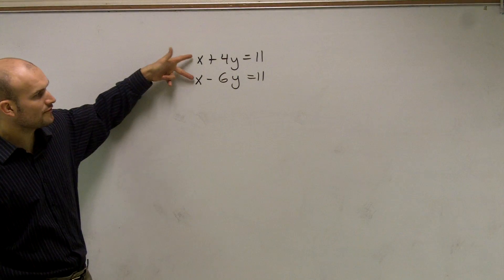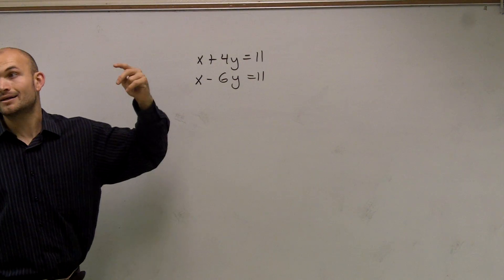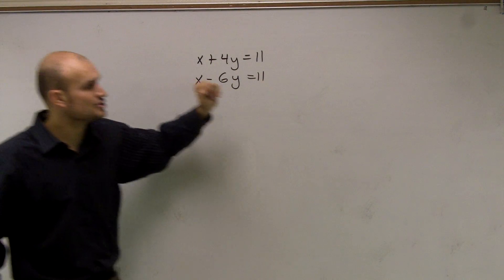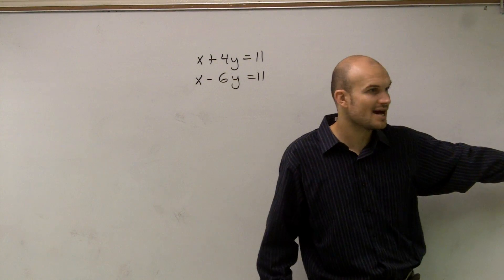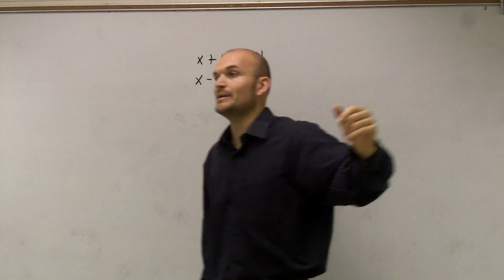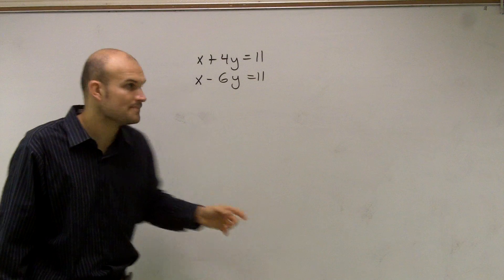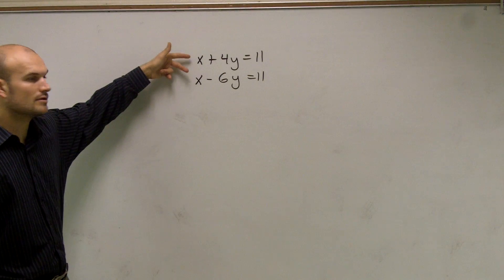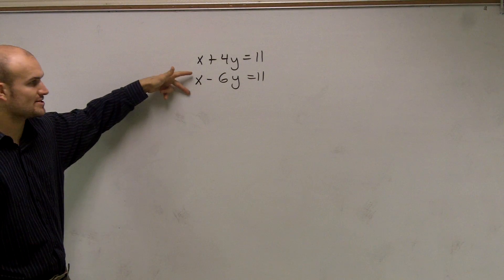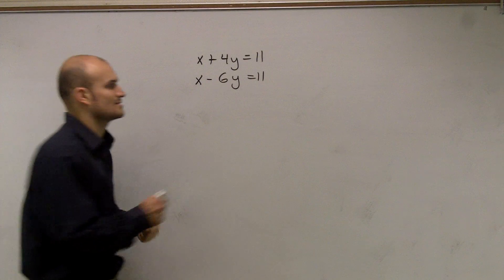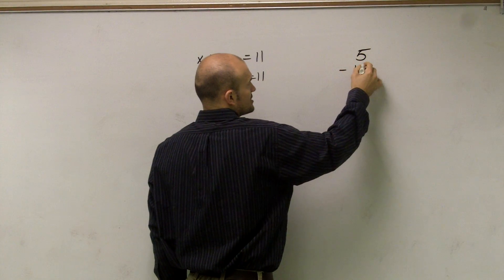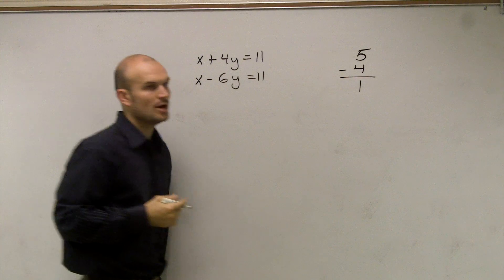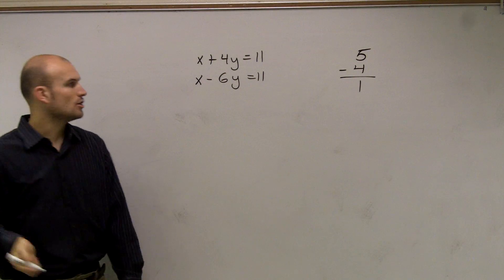So since these have the same coefficient, we now need to look at their sign. When they have the same sign, we now need to do elimination by subtraction. So therefore, I have a positive 1x and a positive 1x, so now I'm going to subtract. So how do you subtract equations? Well, just like you subtract numbers.